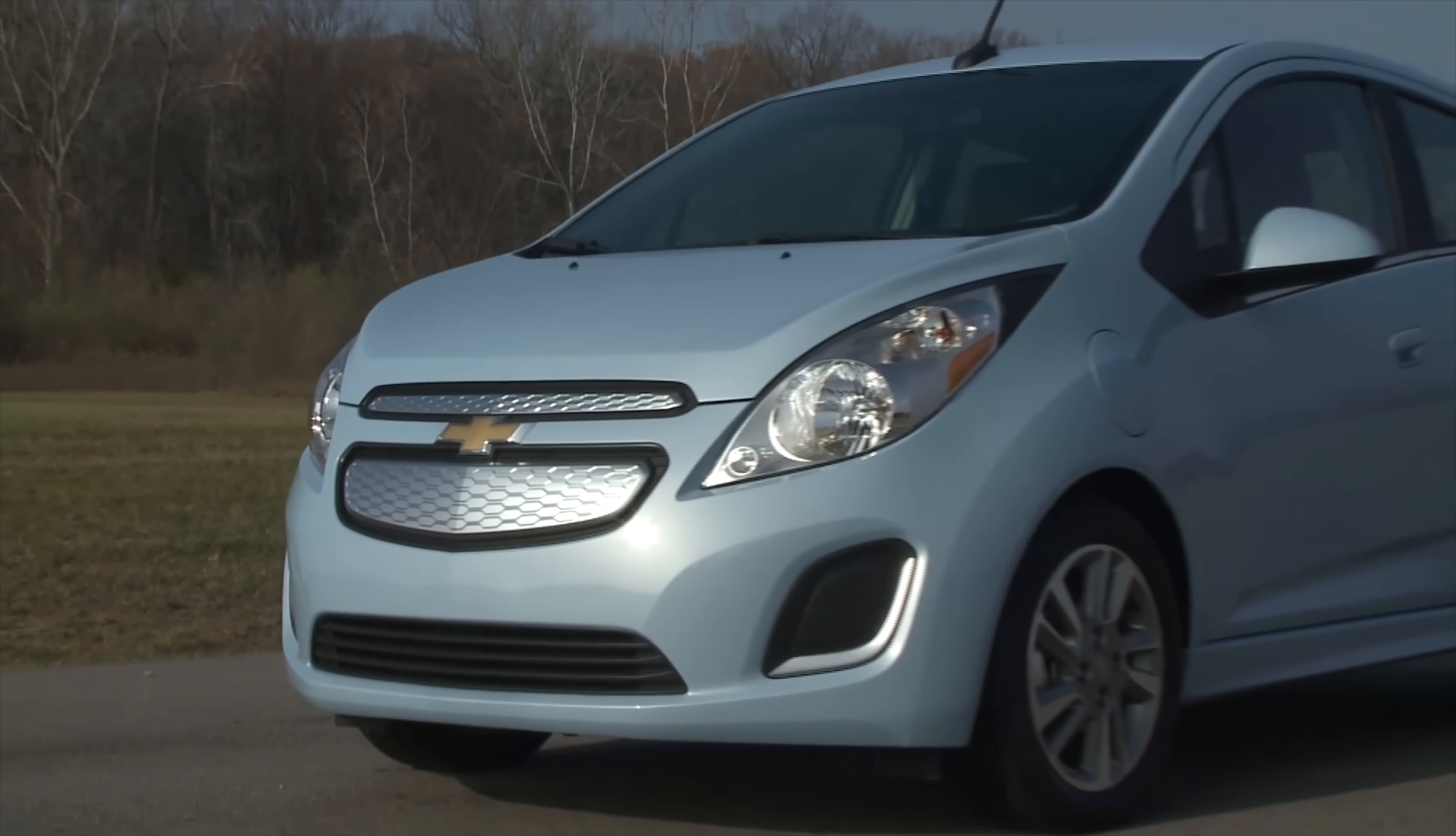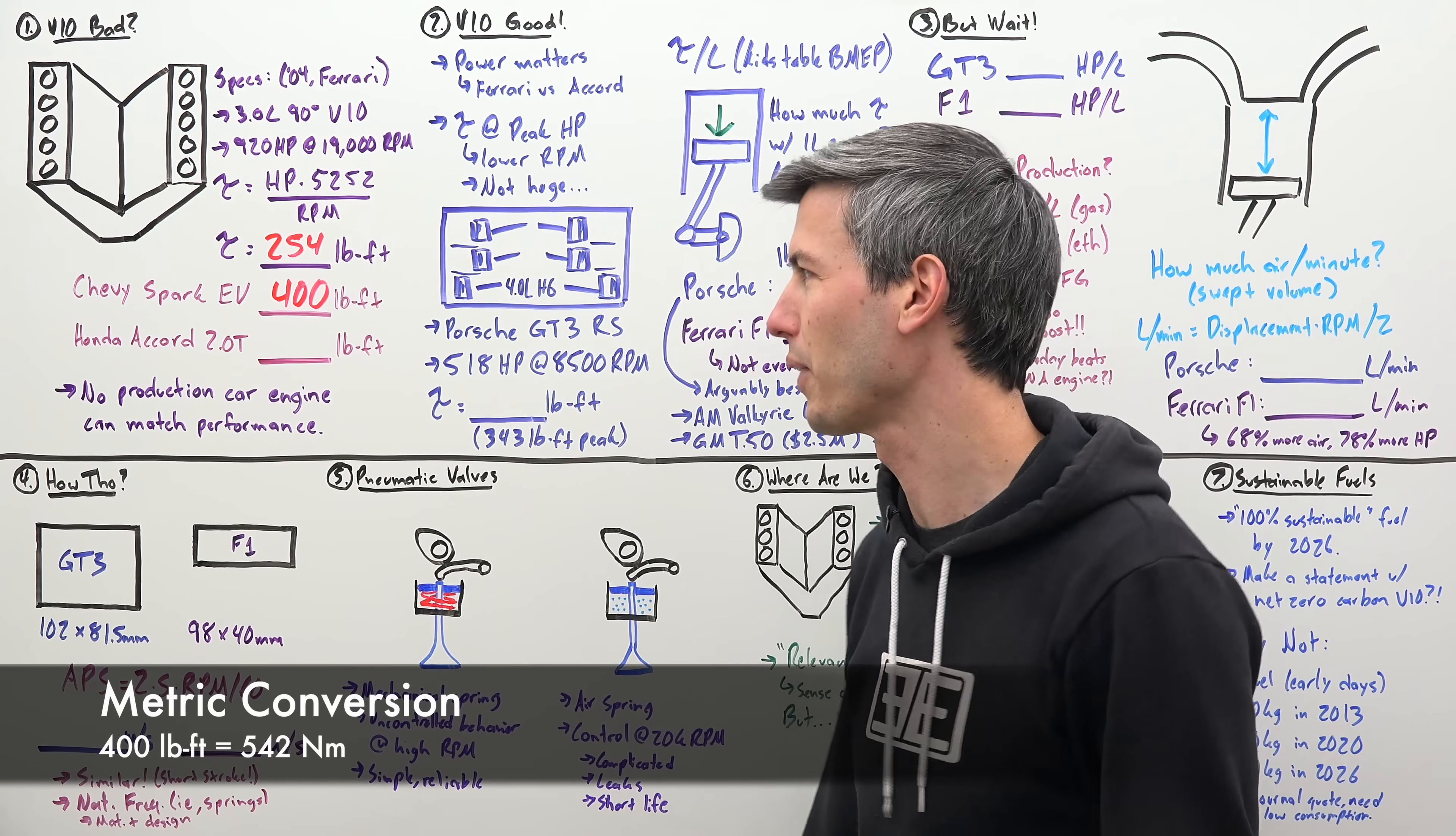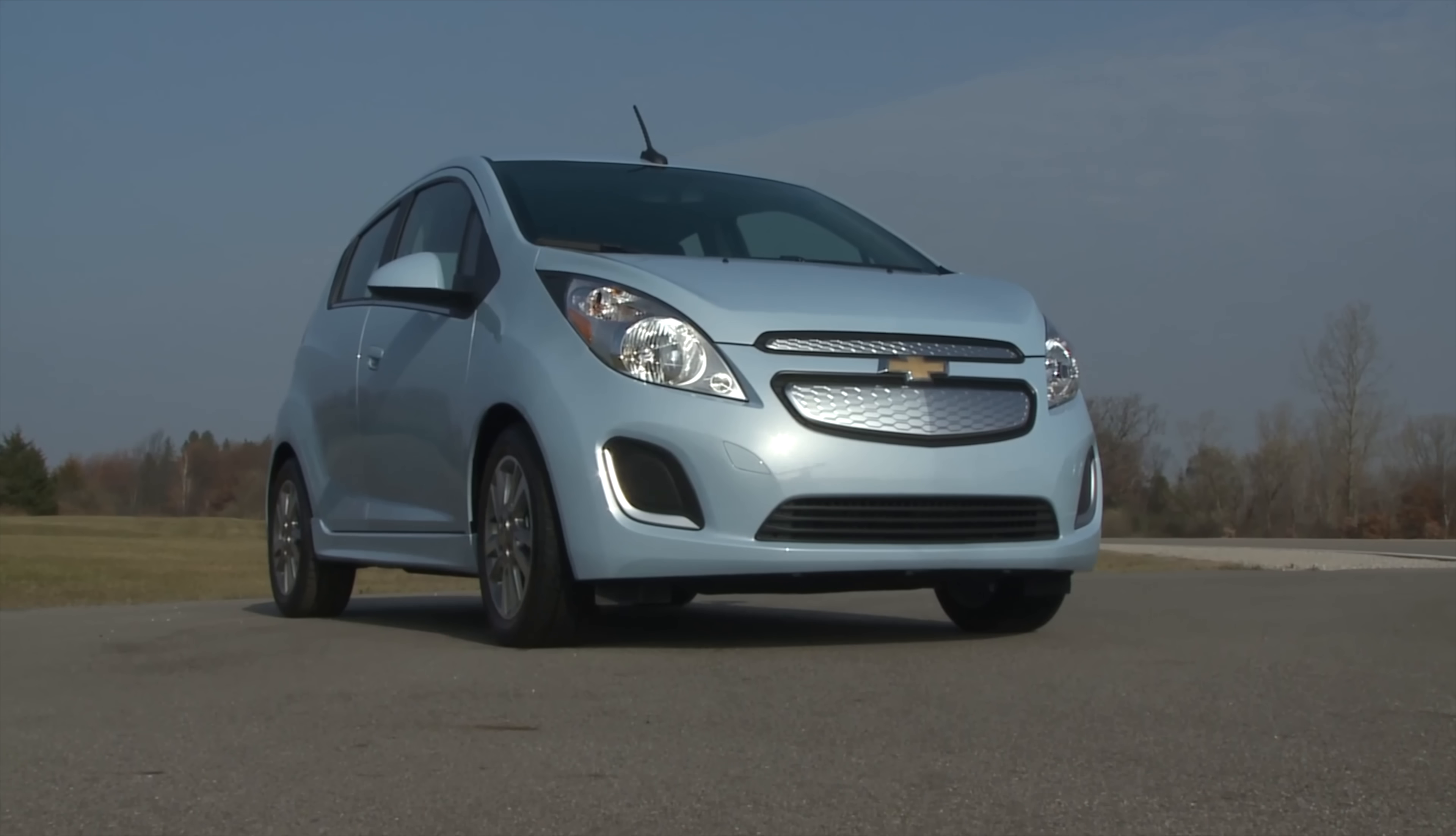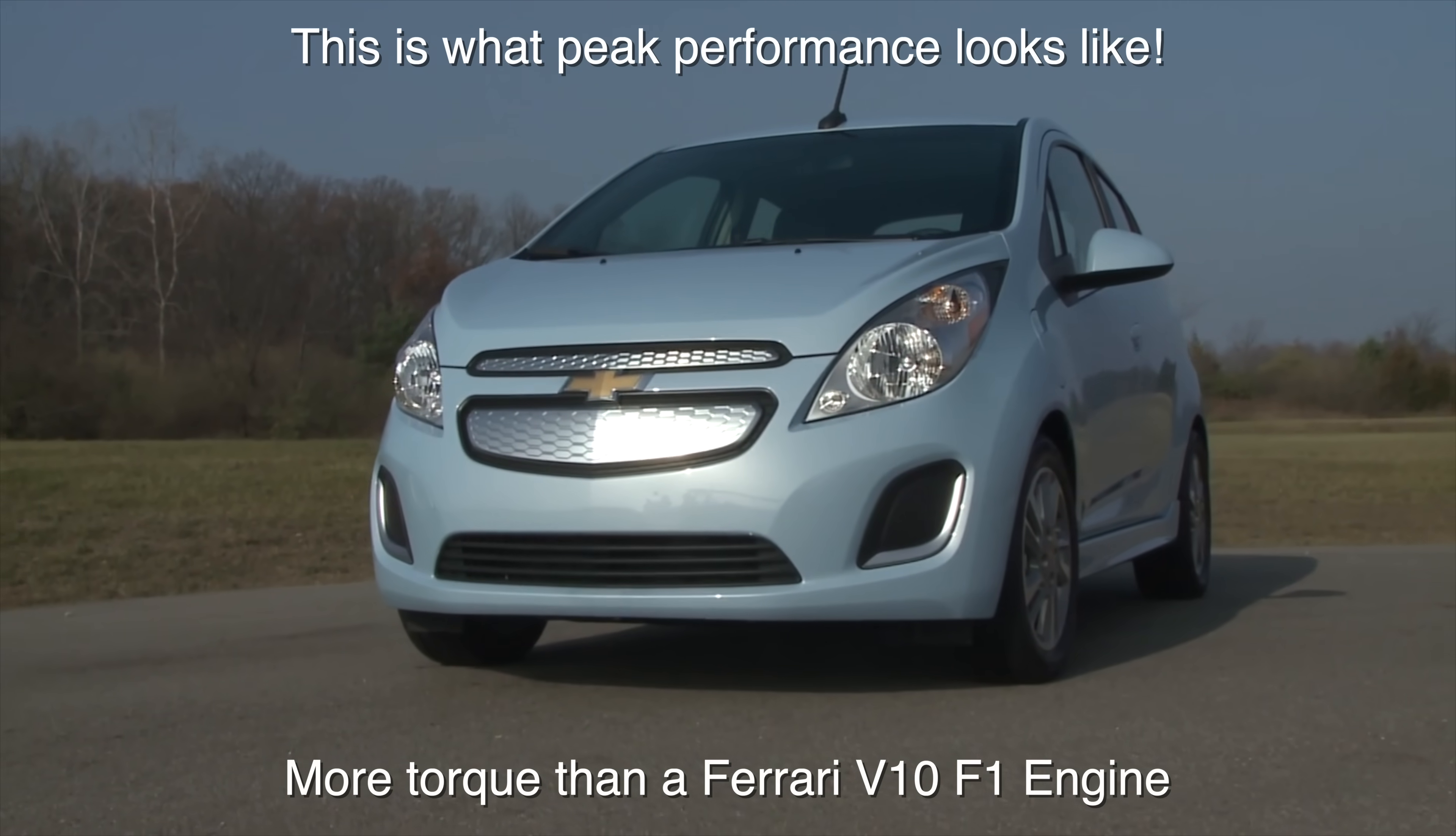A Chevy Spark EV, one of the dorkiest electric cars of all time, has 400 pound-feet of torque. But that's an electric car, not really a fair comparison. How about a Honda Accord, simple old sedan with a 2 liter turbo engine, 273 pound-feet of torque. So more than this incredible engine that we all hail from the early 2000s of being this engineering marvel. Only 254 pound-feet of torque.